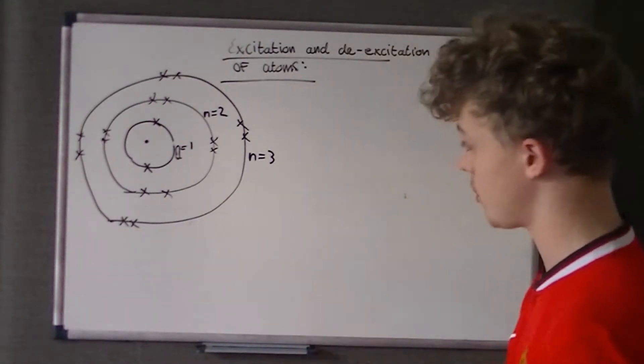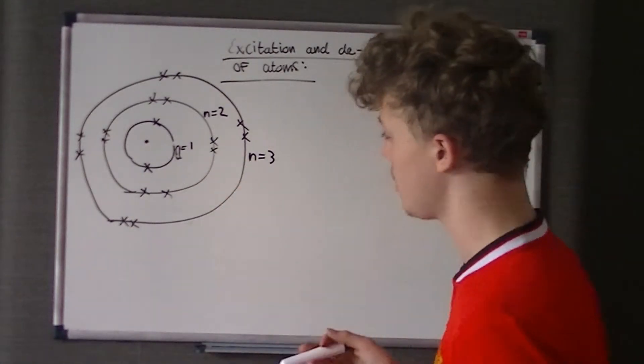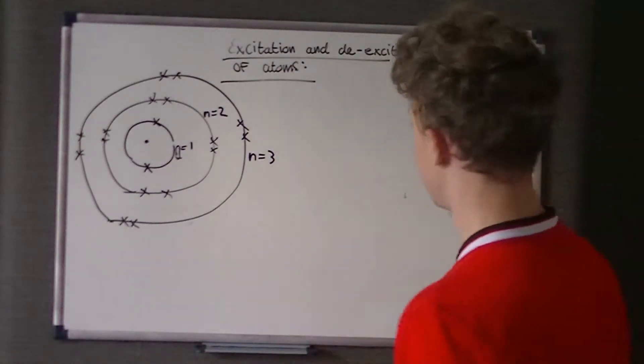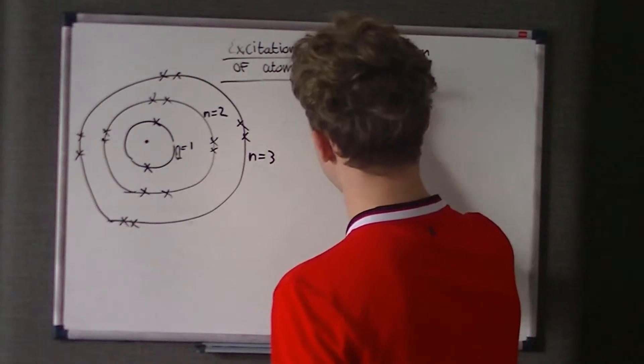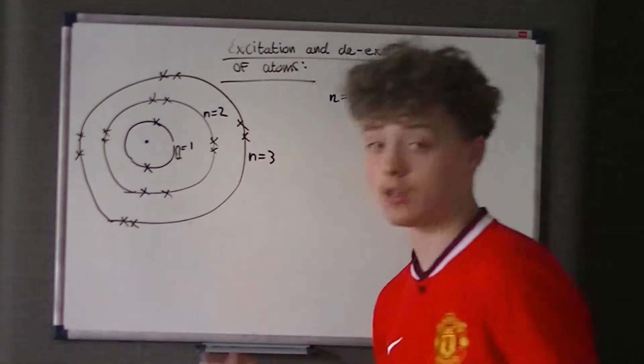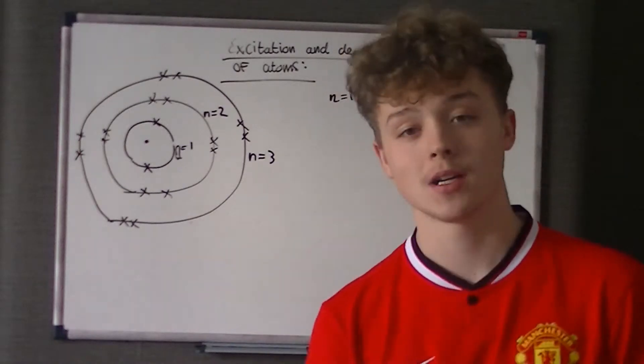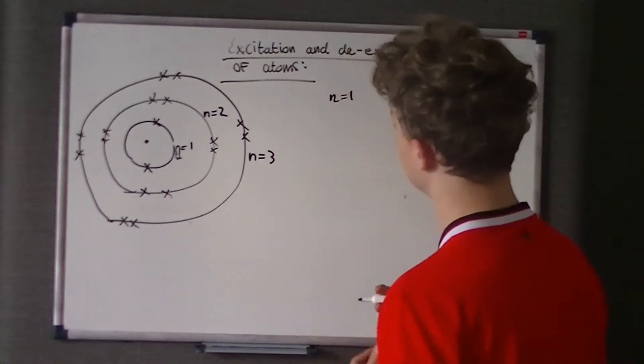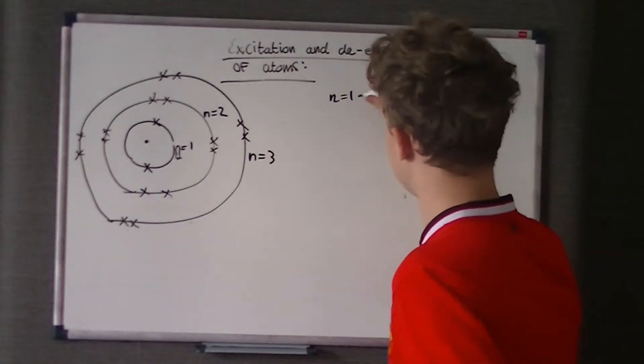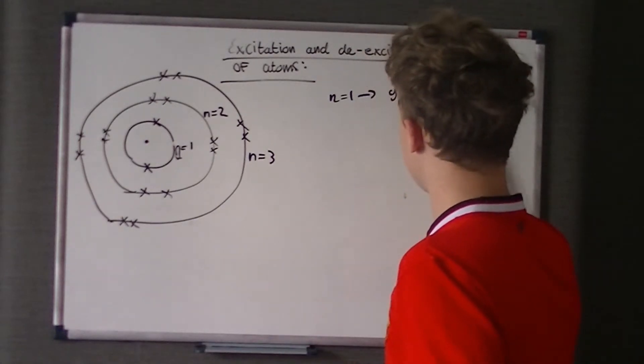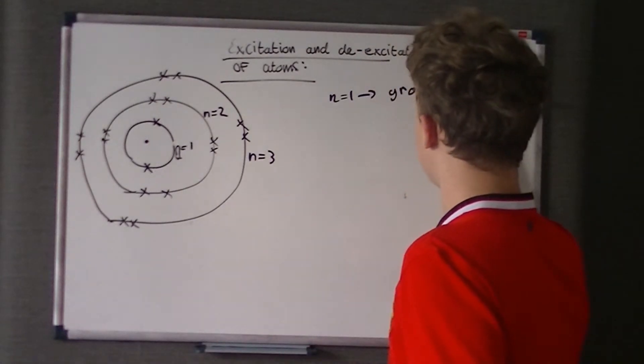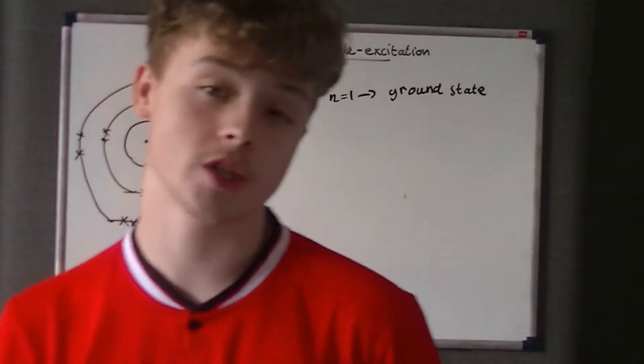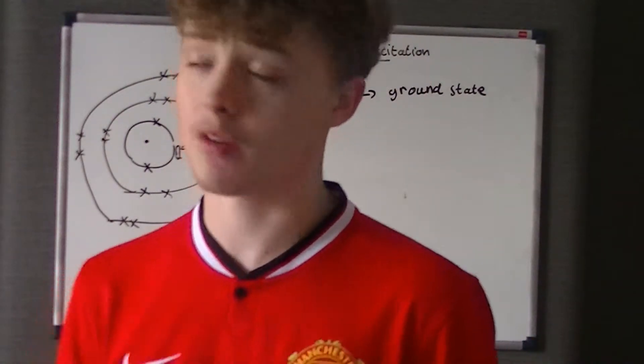Right, I'm only going to do three energy states inside this atom. It's going to have two, eight, eight electrons. So that is a very basic, simplified version of an atom. Why have I called the smallest one N1, N2, and N3? Well, the N represents the energy state in an atom. So N1, as you can see, is the middle or the smallest circle. It has the lowest energy level of the atom.